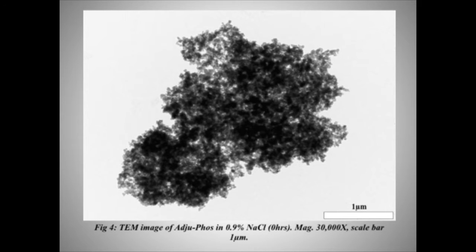Moving on to Adjuphos, you can see a distinct difference in morphology. Adjuphos is made up of a platy-like structure — individual plates in the order of 50 nanometres — which come together in sodium chloride to form aggregates of approximately three microns. This is typically what we see for Adjuphos. It should also be noted that Adjuphos is amorphous.